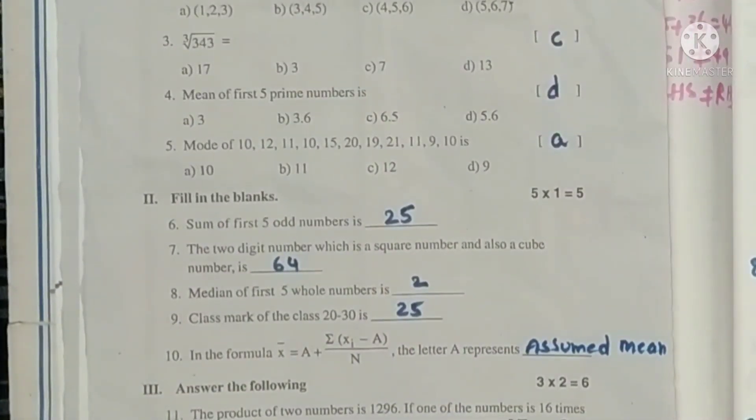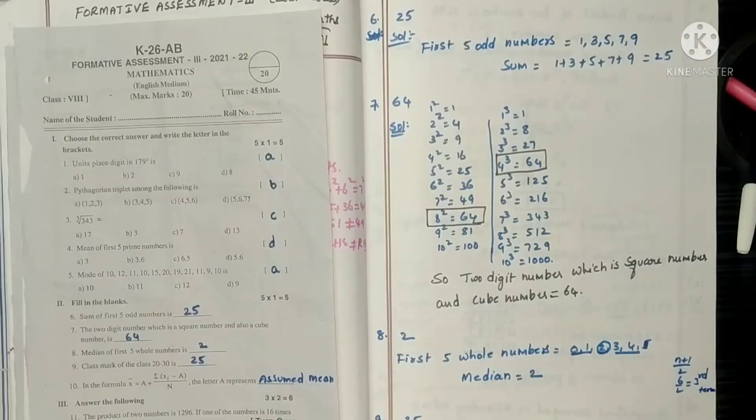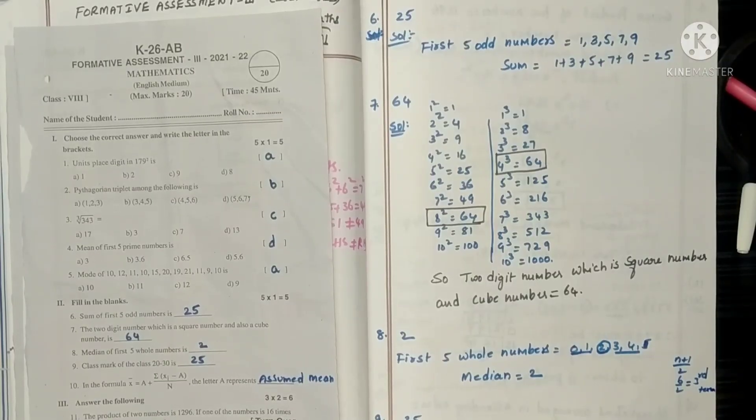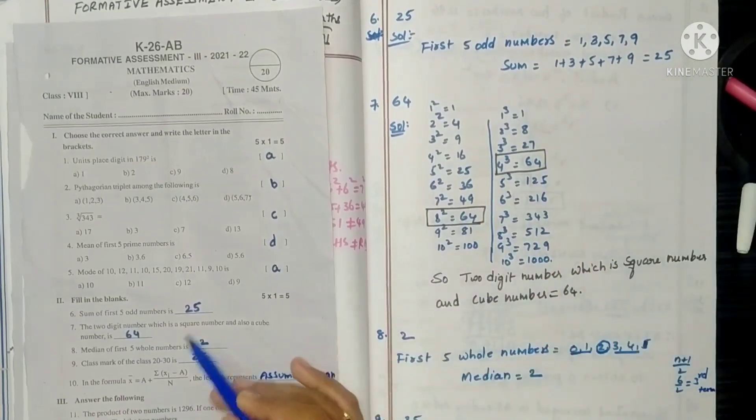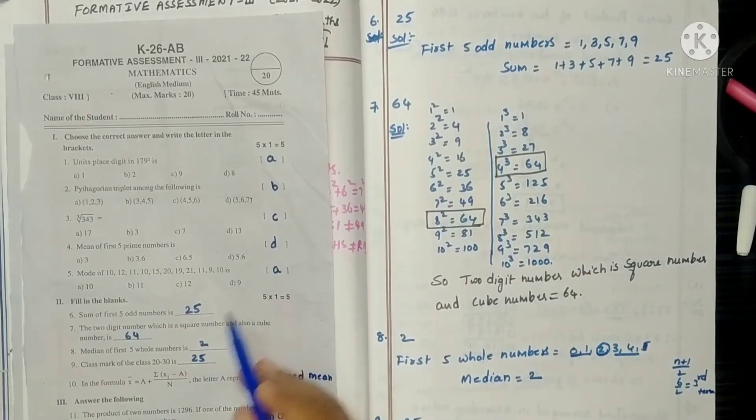Next, fill in the blanks. Sum of first 5 odd numbers is. First 5 odd numbers, if you add them, the sum will be 25. So 25 is the answer here.